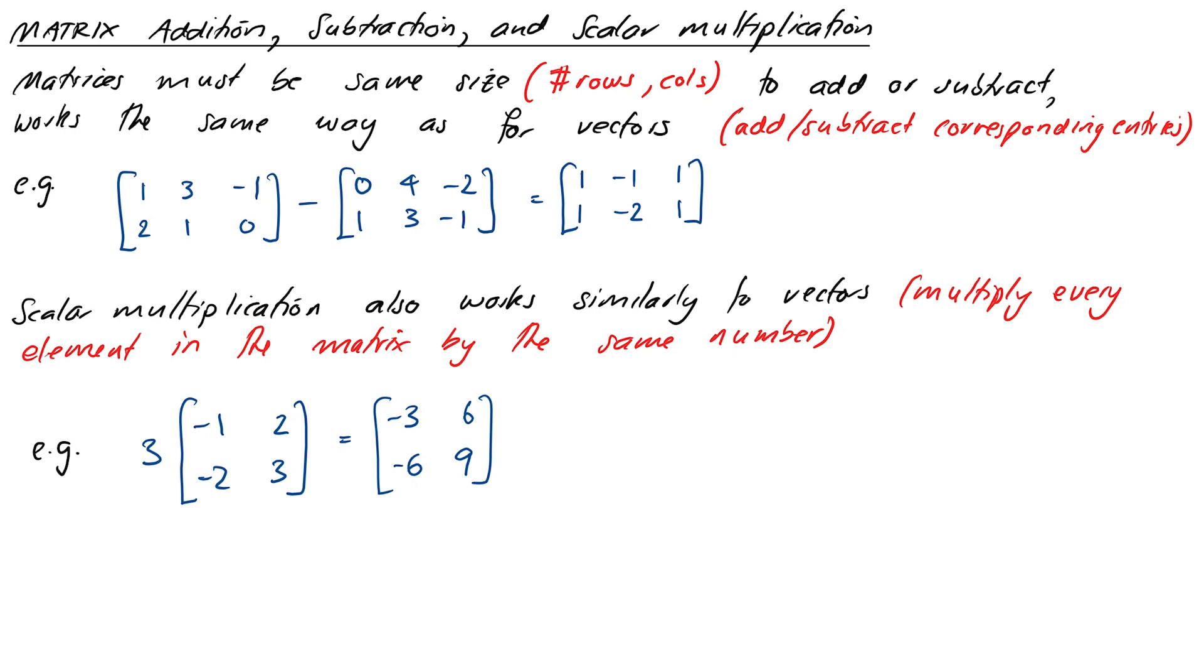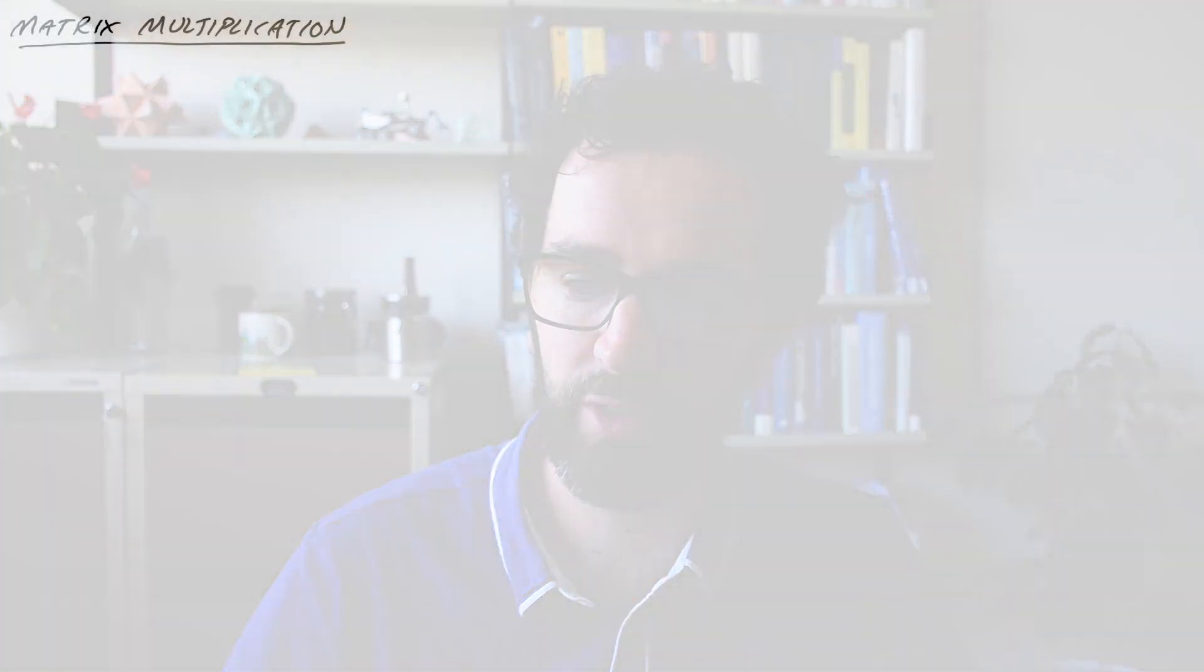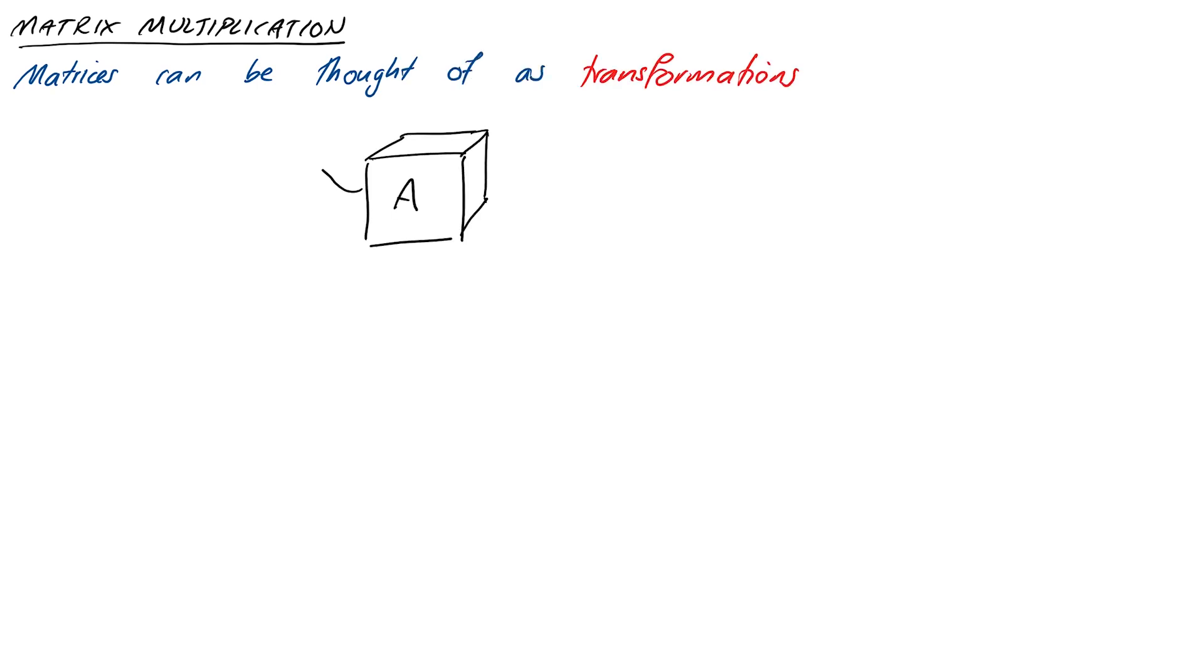Now where things get fundamentally different is with multiplication. With vectors we had a dot product between two vectors which gave us a number, and in R^3 we had the cross product. Matrices have a genuine product that returns a matrix, and it's not just multiplying corresponding entries. Before we understand this definition, we need to think of matrices as transformations. When we take A times X, it produces another vector Y.